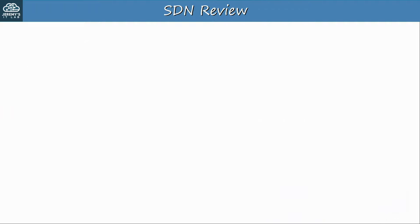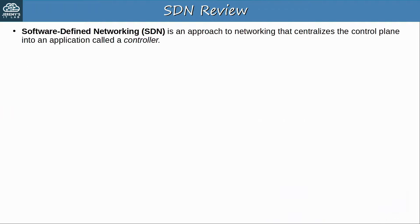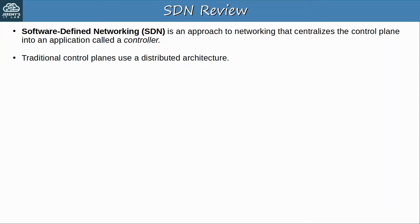SDN is an approach to networking that centralizes the control plane into an application called a controller. Traditional control planes use a distributed architecture, which means that every network device has its own control plane. The control planes of each network device use protocols like OSPF to communicate with each other and share routing information. Each device has its own ACLs and security rules — that's a distributed control plane.